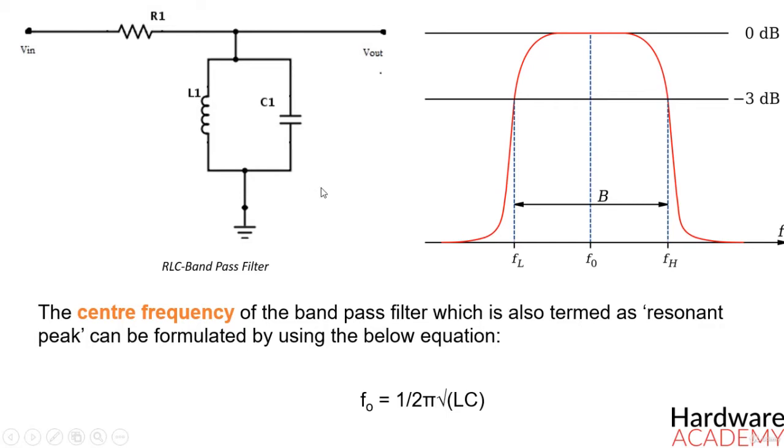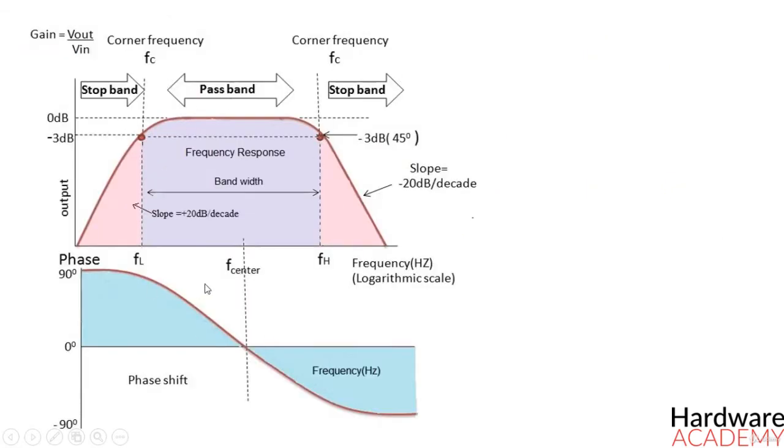The frequency response curve of the bandpass filter is shown here. The signal is attenuated at low frequencies, with the output increasing at a slope of 20 decibel per decade, until the frequency reaches the lower cutoff frequency.